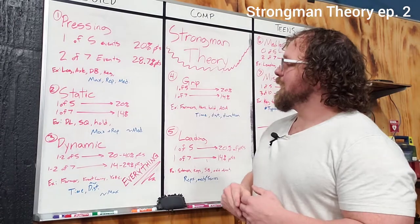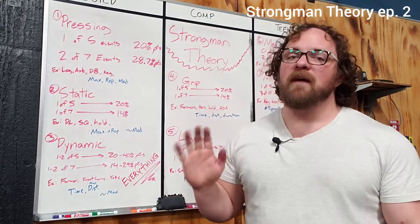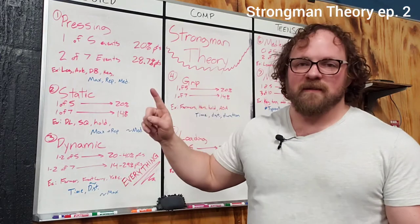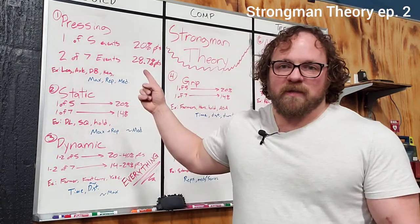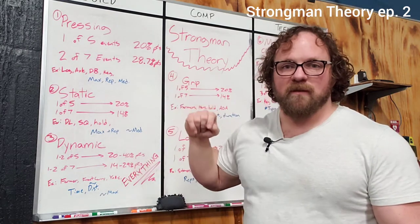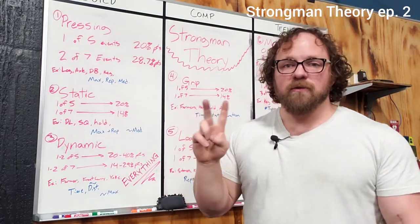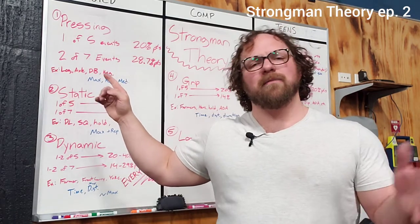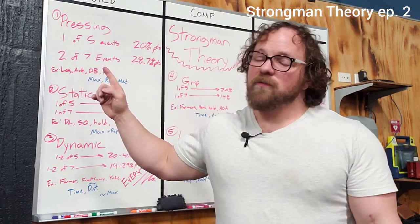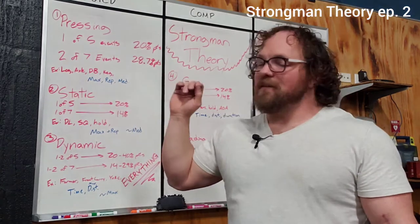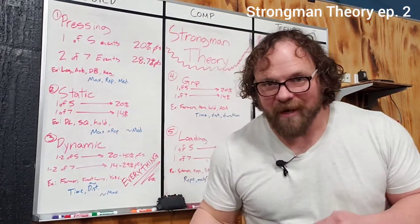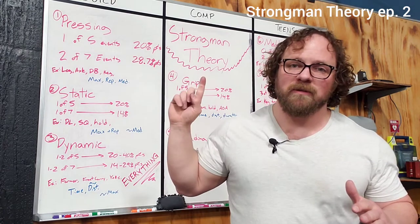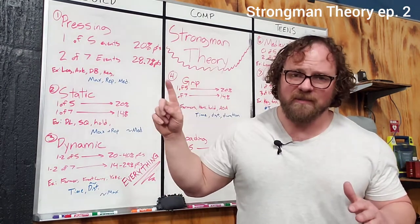In a one-day contest, you typically see five events, and one of those will almost certainly be a pressing event — that's 20% of the available points coming directly from your pressing ability. In a two-day contest with seven events, you typically see about two pressing events, which means 28.7% of your points come from pressing. Pressing takes a while to develop and is something you absolutely must have to be competitive in strongman.